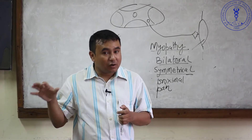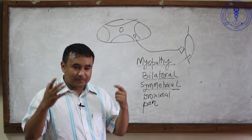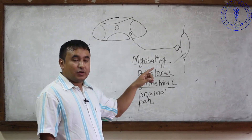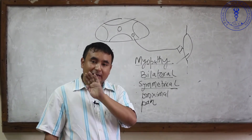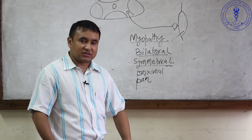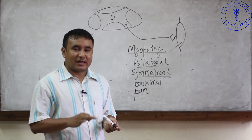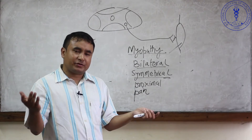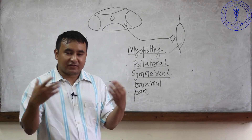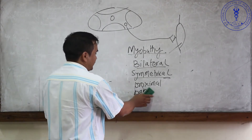The patient will have normal bladder and bowel function. Do you think the patient will have altered sensorium in myopathies? No, because the sensorium is maintained by the cortex. So in myopathy: the patient will definitely have weakness - proximal, symmetrical, and bilateral - but will not have sensory features like numbness or tingling, will have normal bladder and bowel function, and normal sensorium. If these features are present, always think about myopathy.